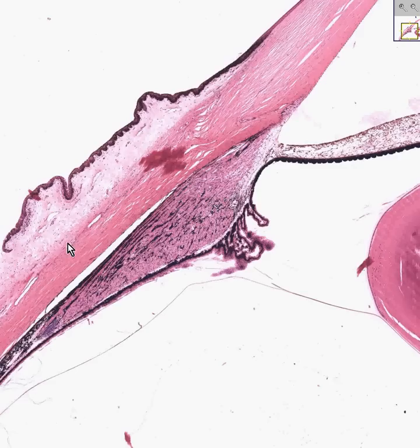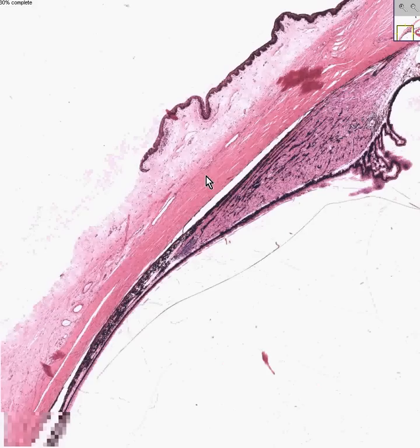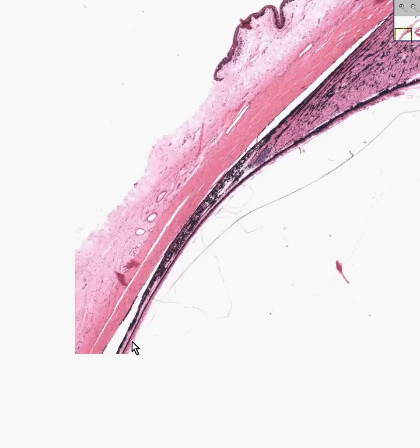Also notice that we have a lot of blood vessels here. And also notice that here's that RPE coming all the way down eventually towards the retina. But also notice we don't have a retina. We have a choroid. We have a sclera. We have connective tissue surrounding the sclera. We have a bulbar conjunctiva.